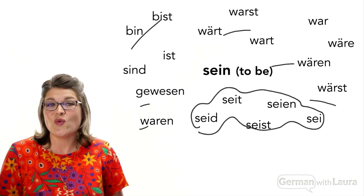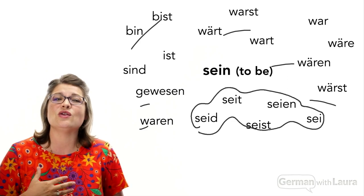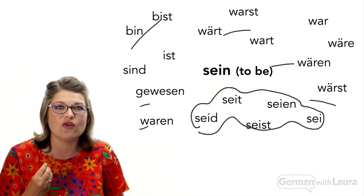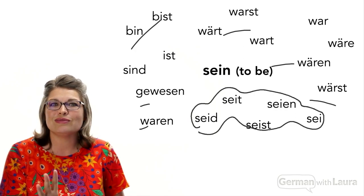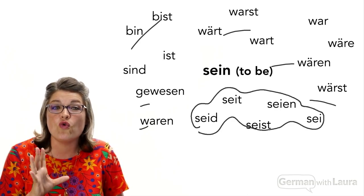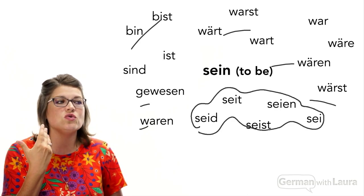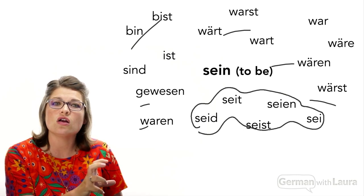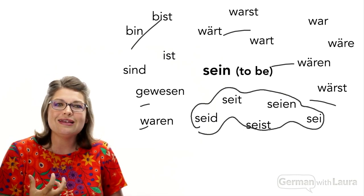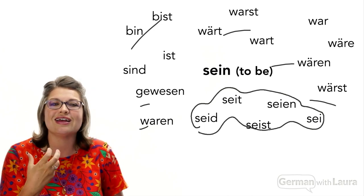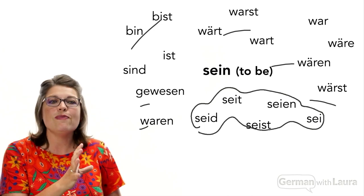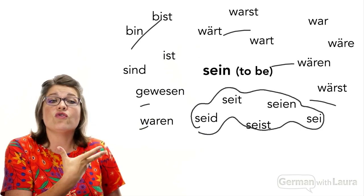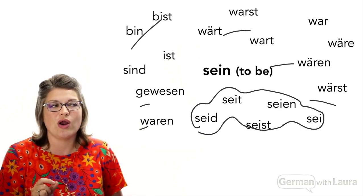By the end of this video, I want you to be feeling more capable and confident when it comes to German verbs. We're going to break them down into a three-step formula that allows you to correctly work with any German verb, break it down to the component parts, and manipulate it into different varieties — specifically in the present tense.